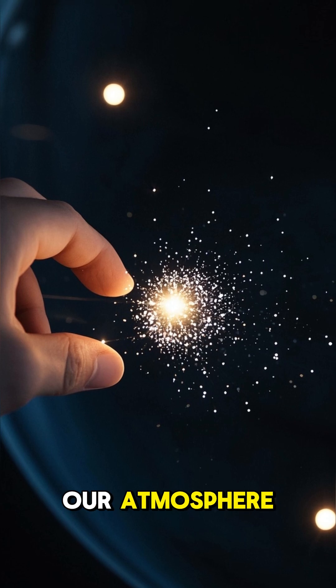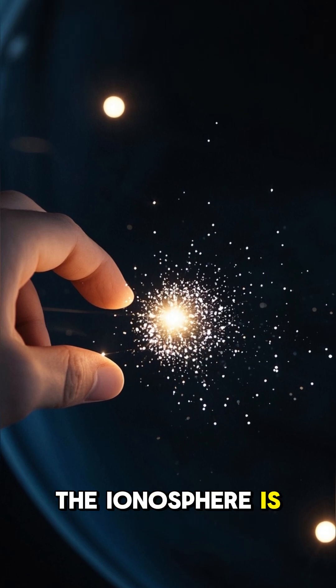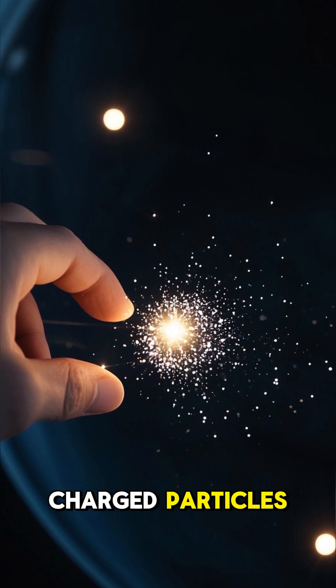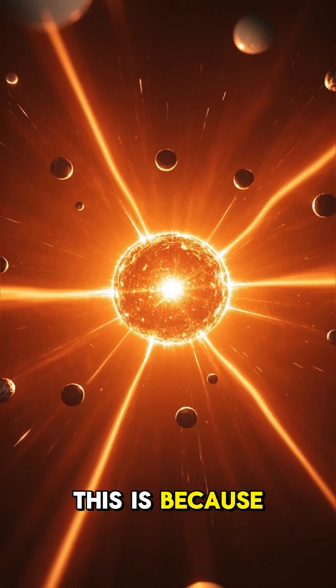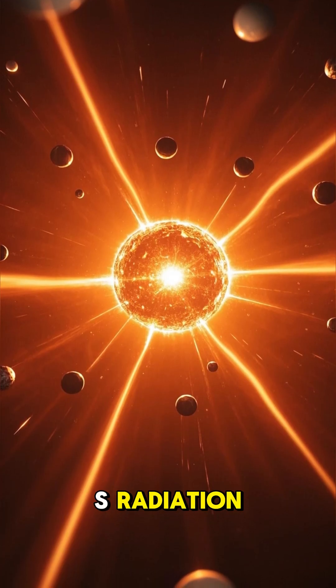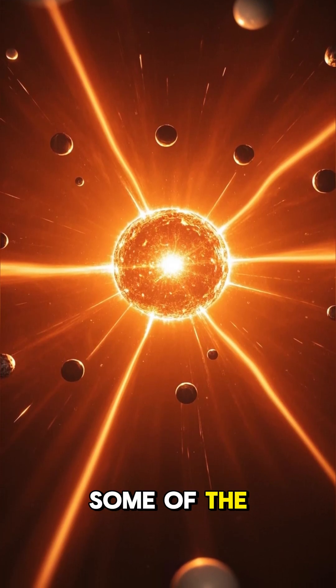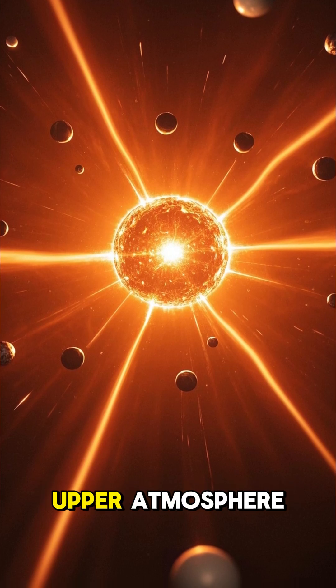But unlike the other layers of our atmosphere, the ionosphere is full of electrically charged particles, or ions. This is because the Sun's radiation actually strips away some of the electrons from the atoms in the upper atmosphere.